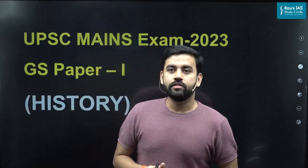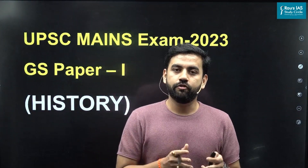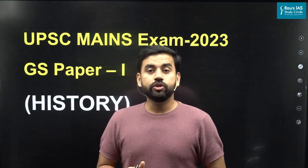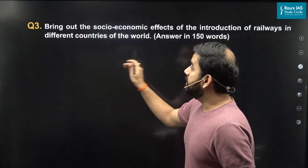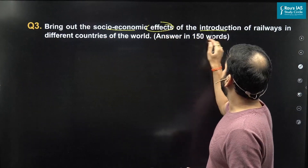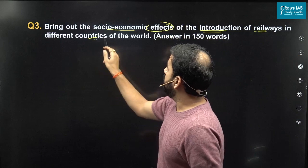Hello everyone, I am Jatin Bhadwaj and I am going to discuss two important questions from the GS paper 1 history section. The history section this year had 6 questions, out of which 2 have been taken from the 15 marker and the 10 marker. The first question is question number 3 from the paper, which says: bring out the socio-economic effects of the introduction of railways in different countries of the world.